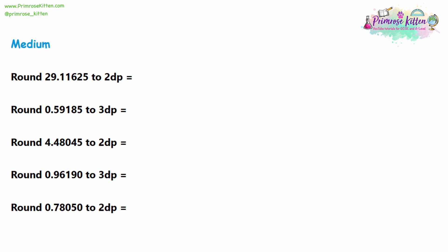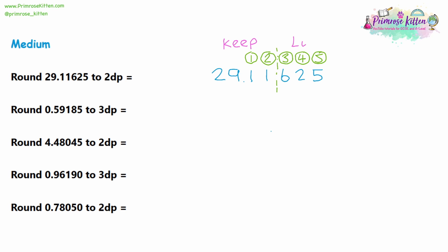Moving on to the medium questions — we now have much longer numbers. The first number is 29.11625. Label the place values: first, second, third, fourth, and fifth decimal places. We're rounding to two decimal places, so rule off after the second decimal place. We're keeping 29.11 and losing the 6, 2, and 5. The first number we're losing is the 6 — that is five or greater, so we are rounding up. The answer is 29.12.